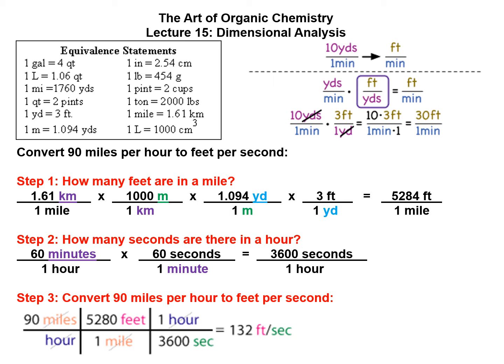So to convert 90 miles per hour to feet per second, we go 90 miles per hour times 5,280 feet per mile times 1 hour per 3,600 seconds. So 90 times 5,280 divided by 3,600 equals 132 feet per second. Notice miles in orange cancel out, hours in purple cancel out, and what we're left with is feet per second.